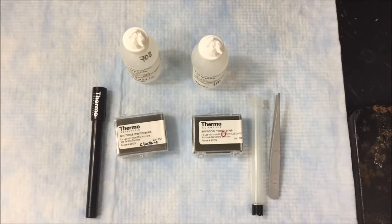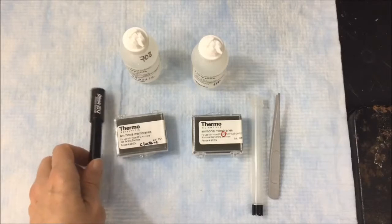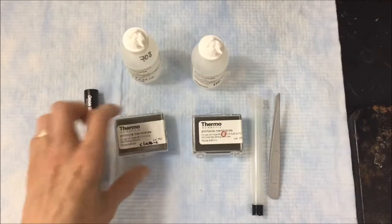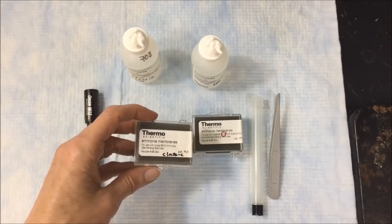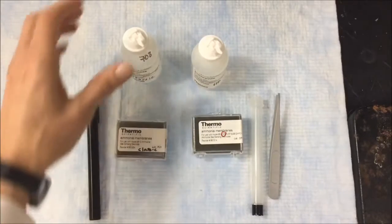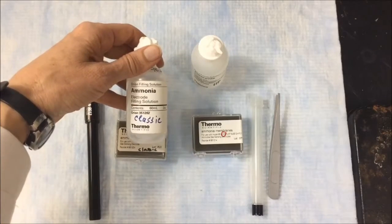Here are the materials needed to replace and refill the two versions of the Ammonia ISE. This is the Orion 9512, which is the standard or classic Ammonia ISE. These are the membranes that go with that, part number 951204. This is the fill solution that goes with that, part number 951202.